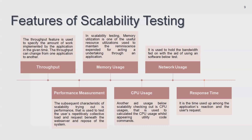Memory usage — how much memory the application consumes and whether that usage increases over longer durations or remains stable. Network usage — how much network bandwidth is consumed by the application. For example, IPTV-related applications consume more bandwidth than others, requiring a minimum of 2 GB for buffering. If bandwidth consumption is high, the application will not work on lower internet speeds, which is a flaw in that application.